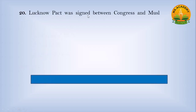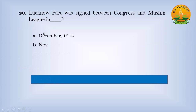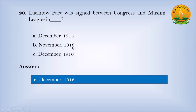The Lucknow Pact was signed between Congress and the Muslim League in: Option A, December 1914; Option B, November 1916; Option C, December 1916. Answer: C — December 1916.